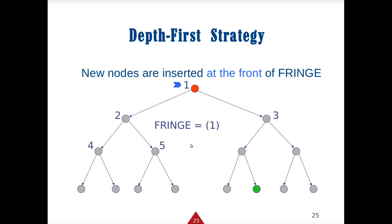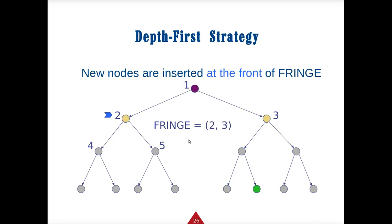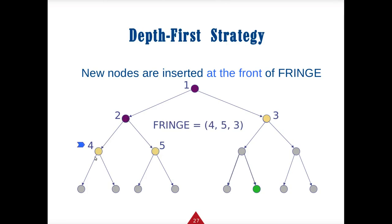For depth-first search, all new nodes go to the front of the fringe. Starting at 1, we find 2 and 3. We search 2, so 4 and 5 go to the front — the fringe is now 4, 5, 3. We go to 4, then deeper to nodes like 8 and 9, building the fringe as 5 and 3 after those don't lead to the right path. The fringe becomes those remaining nodes and we keep going deeper.